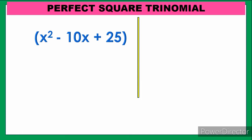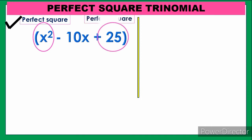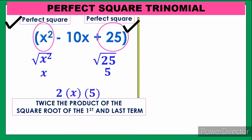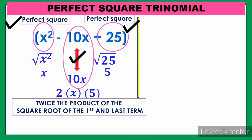Next: x² minus 10x plus 25 — is it a perfect square trinomial? x² is a perfect square and 25 is also a perfect square. For the middle term: square root of x² is x, square root of 25 is 5. Then 2 times x times 5 equals 10x, which matches. Therefore, this trinomial is a perfect square trinomial.